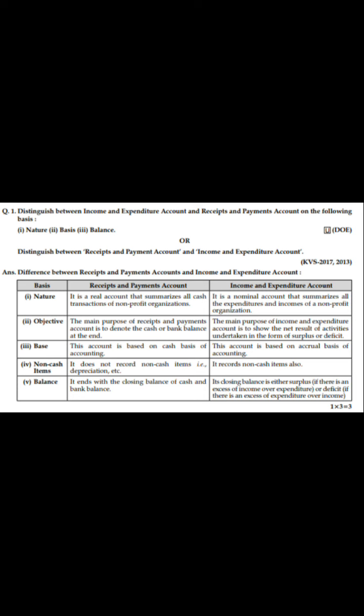On the basis of non-cash items, Receipt and Payment Account does not record non-cash items like depreciation, while Income and Expenditure Account records non-cash items as well — including cash items along with non-cash items.